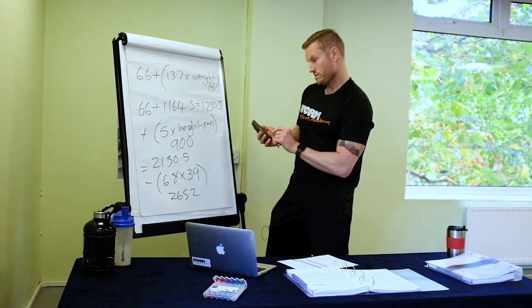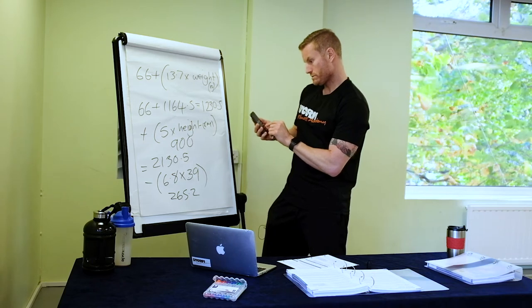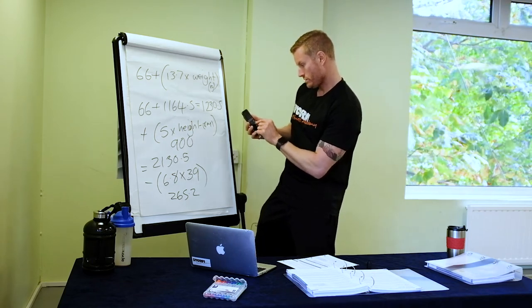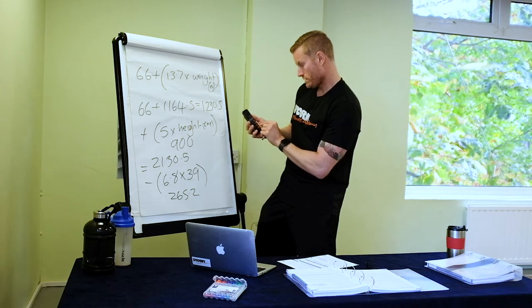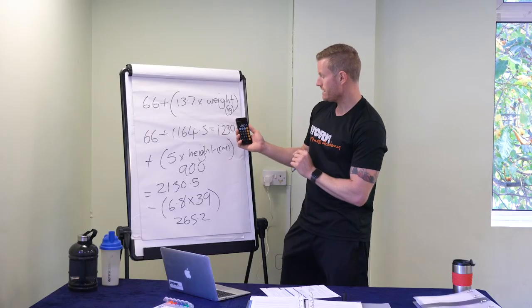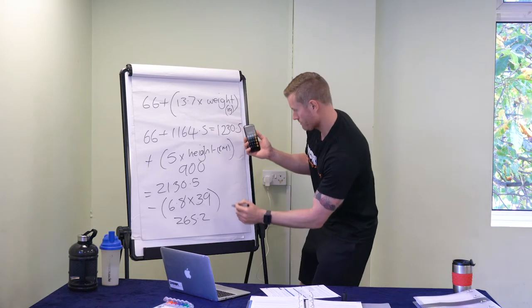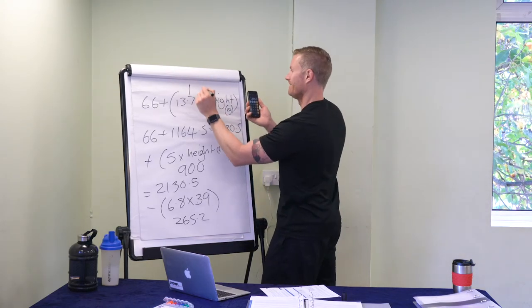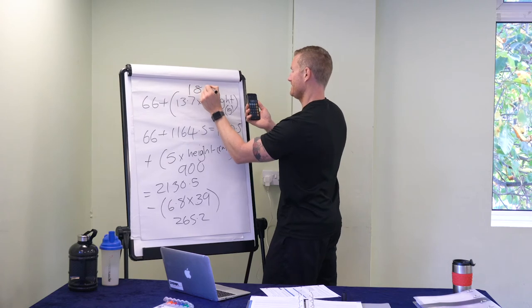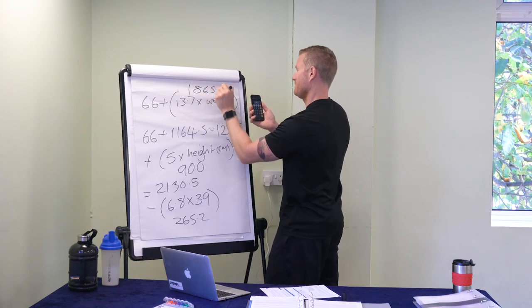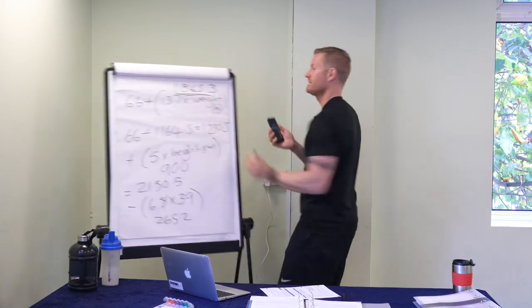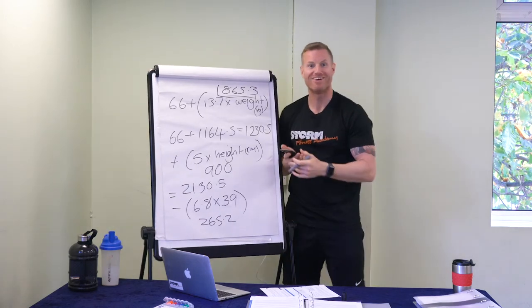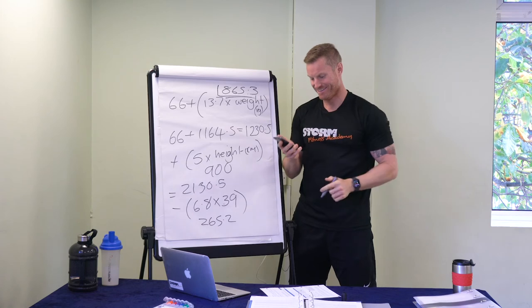So 2130.5 minus 265.2 equals 1865.3. That is my basal metabolic rate. Easy.